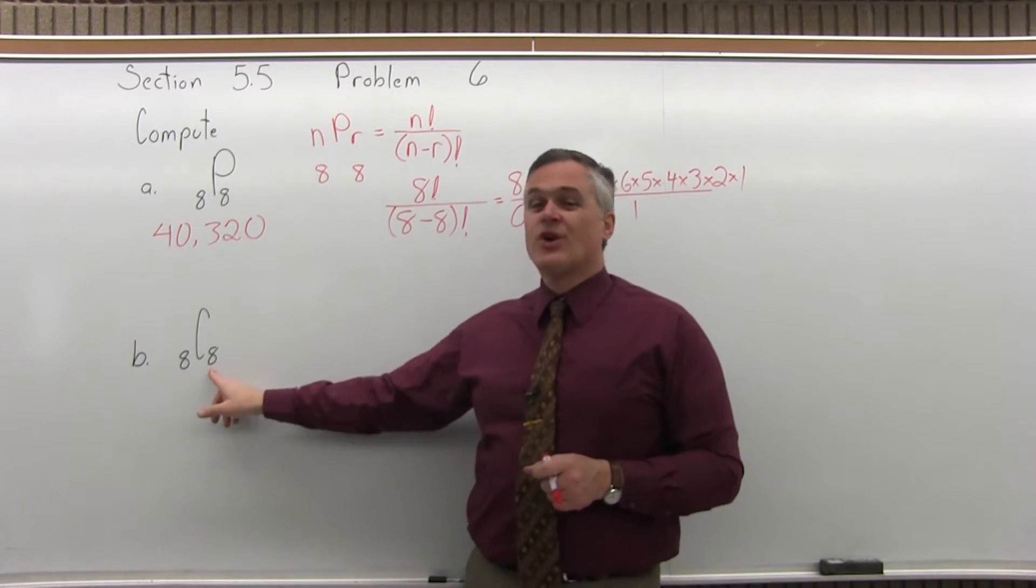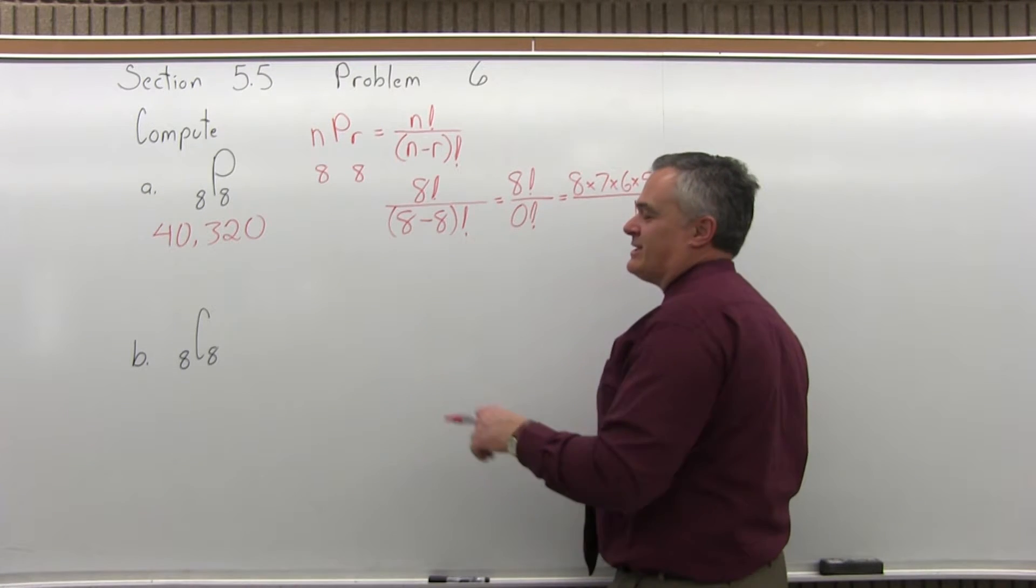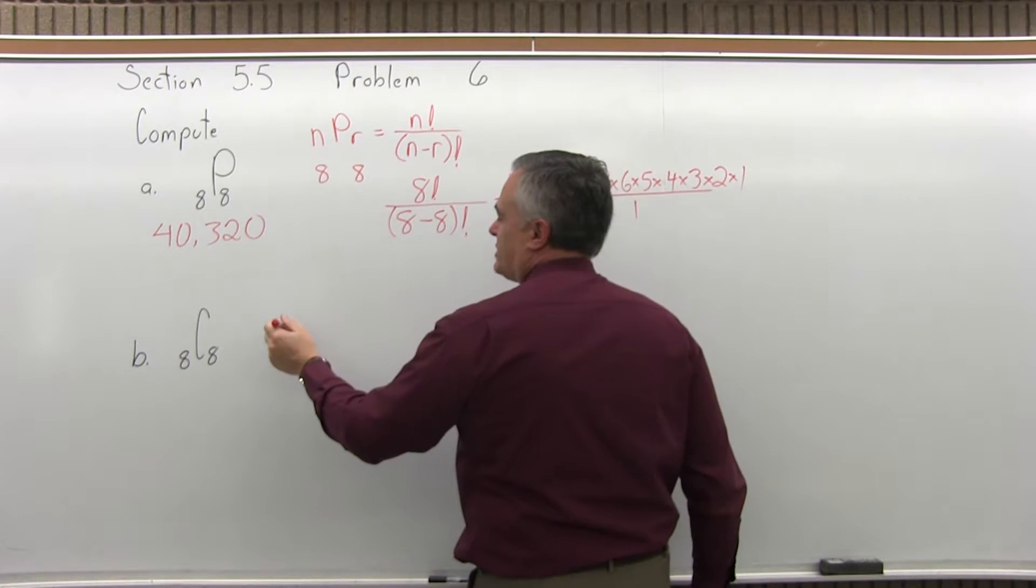Now, the combination one will be easier, you'll see. Let's do 8 combination 8, and it's going to be not nearly as big as the 40,000 answer we've got for the permutation.